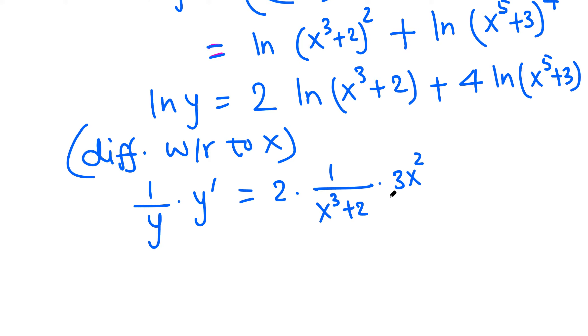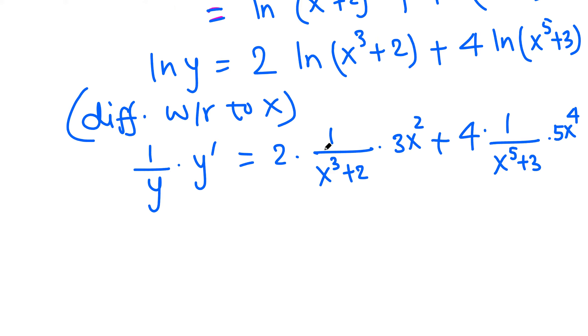Plus, in the same way, 4 times 1 over (x⁵ + 3) times the derivative of this, which is 5x⁴. Let's combine and simplify this.